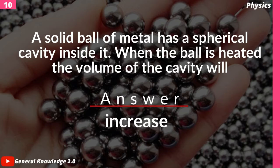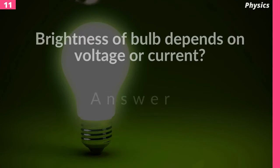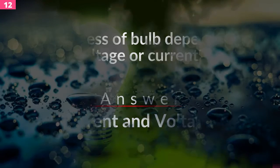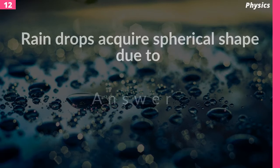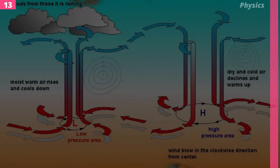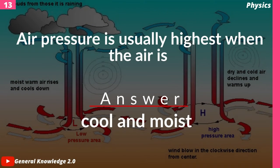A solid metal ball has a spherical cavity inside it. When the ball is heated, the volume of the cavity will — answer: increase. Brightness of a bulb depends on voltage or current? Answer: current and voltage.